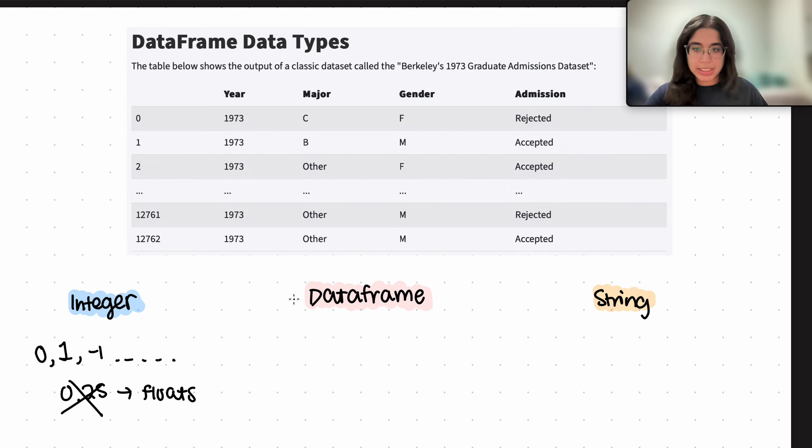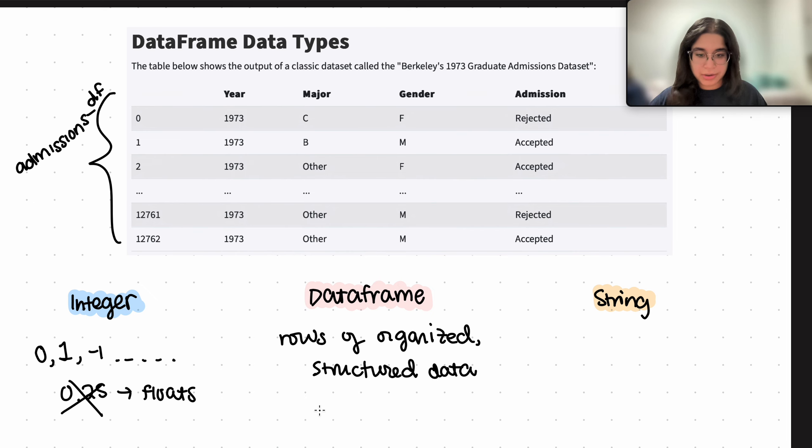And a data frame is basically what you see right over here in this entire table. For example, if this is called maybe our admissions underscore DF, that's an example of an entire data frame. A data frame contains essentially rows of organized structured data. That's what we use in pandas. We're working with data frames that contain n number of rows with maybe m number of columns.